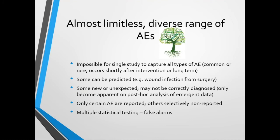There are trials where footnotes were added subsequently stating that post-hoc evaluation revealed some new adverse events had emerged that hadn't been predicted before. So it's not possible to pre-specify all the adverse effects of interest, and that's a major problem for reviewers. Certain adverse effects are reported well, and others are selectively non-reported. Given the huge diversity of adverse effects presented and measured, there is a high risk of false alarms arising from multiple statistical testing—and that's an inevitable problem.